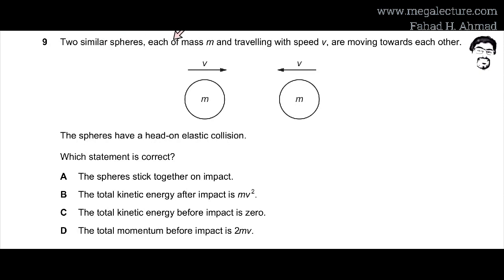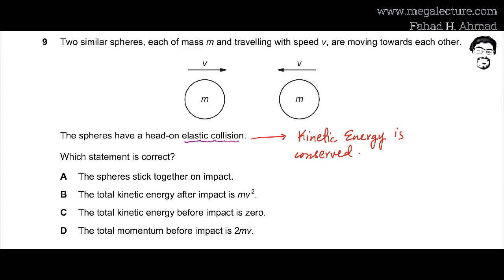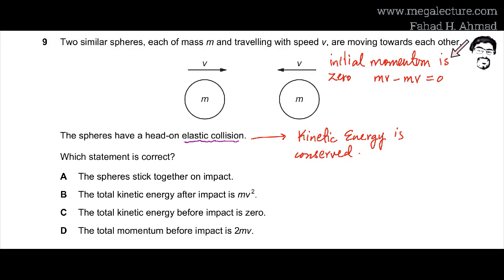MCQ number 9: two similar spheres, each of mass M travelling at speed V, move towards each other for a head-on elastic collision. In an elastic collision, kinetic energy is conserved. The initial total momentum is MV + M(−V) = 0, so the final momentum must also be 0.